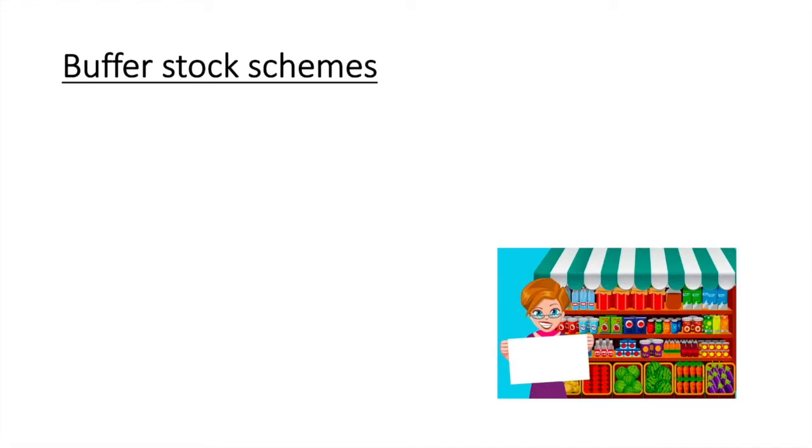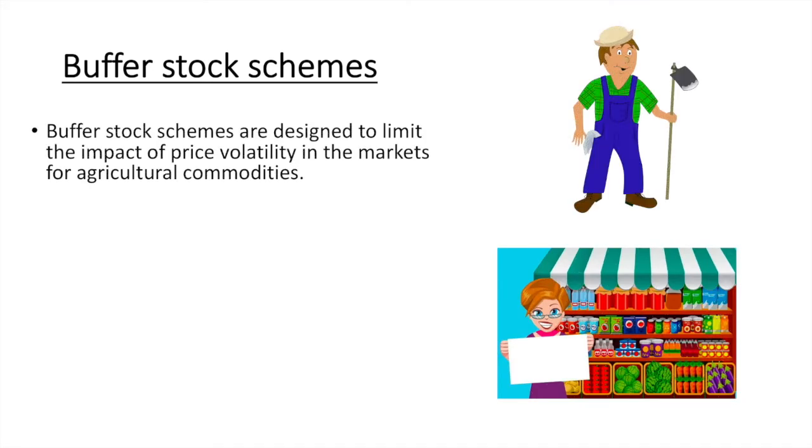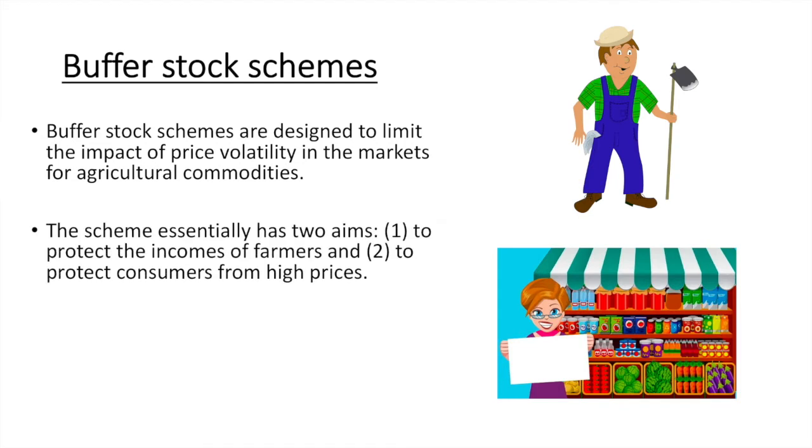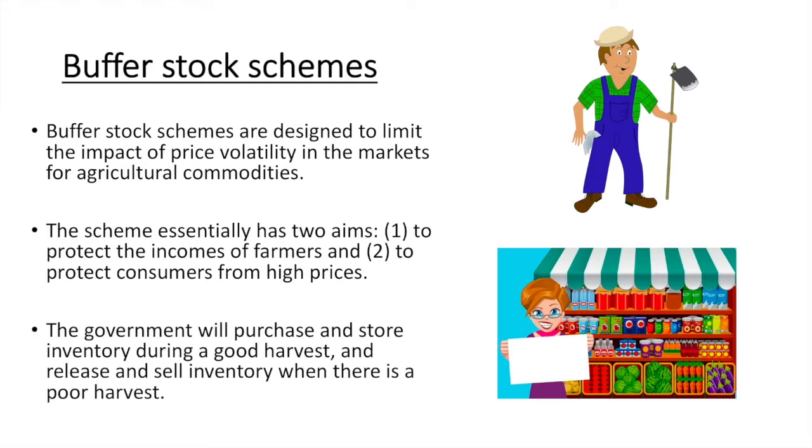Buffer stock schemes are designed to limit the impact of price volatility in the markets for agricultural commodities. The scheme essentially has two aims: to protect the incomes of farmers and to protect consumers from high prices. The government will purchase and store inventory during a good harvest and release and sell inventory when there is a poor harvest.